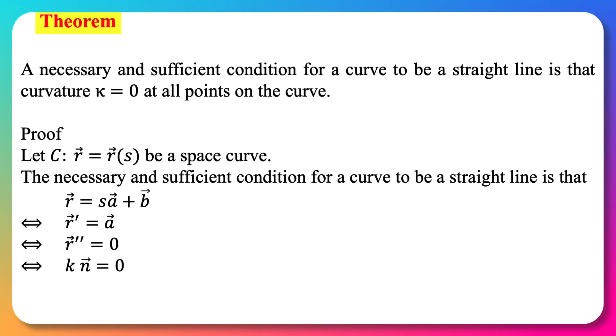We know that r double prime equals kappa n. Since n is a unit vector it cannot be zero, and so kappa equals zero. This completes the proof.